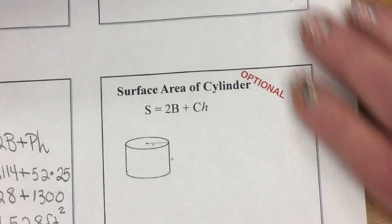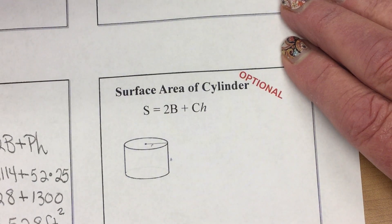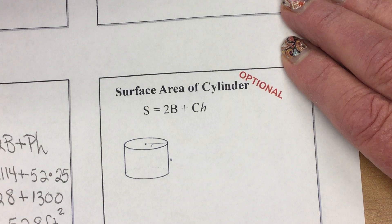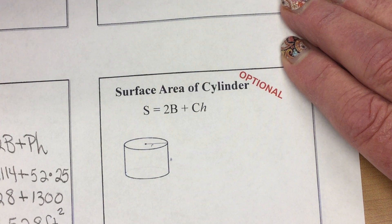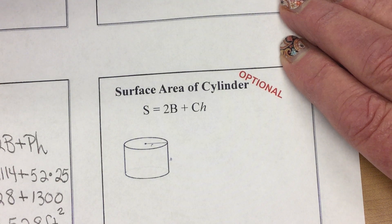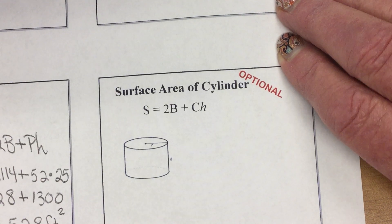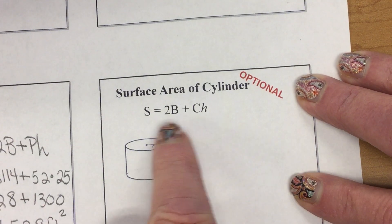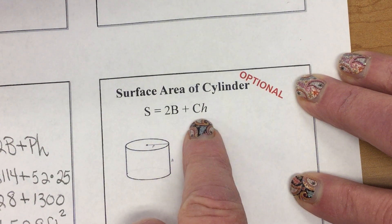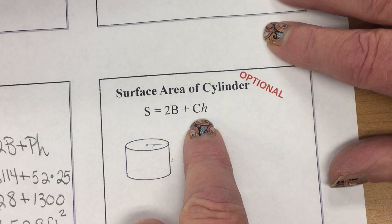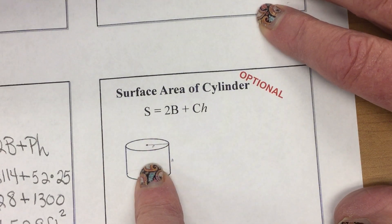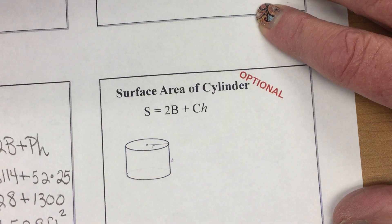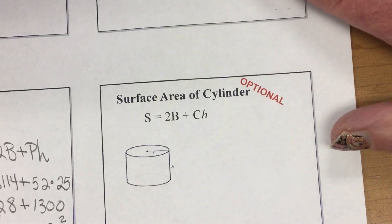Now, if I'm a cylinder, like my coffee mug or a can of green beans, how much metal does it take to make that can of green beans? That's surface area, and instead of perimeter of the base, it's circumference of the base, because that's what we call the perimeter of a circle.